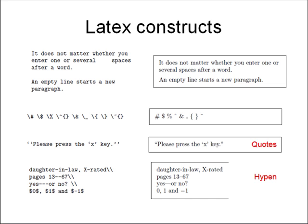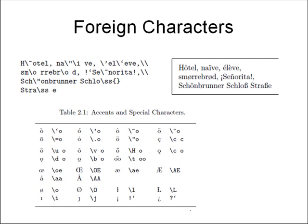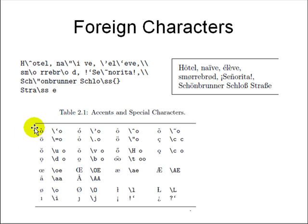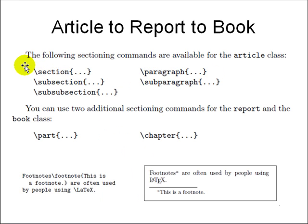LaTeX also has a mode for slides called SliTeX — just change the document style to SliTeX and you get slides. There are also Cyrillic and foreign characters: for example, a double dot on top of 'o' for Swedish, French, or German — backslash open-quote o generates that character. These are used for scientific author names — for example, Gödel uses 'o' with a double dot. Once you have a bunch of reports, you can combine them into a book by using backslash include to include them, making it easy to combine documents from the command line without any UI work.